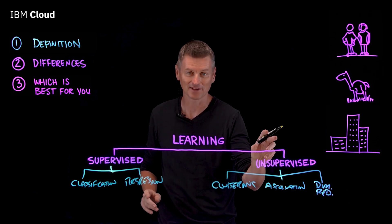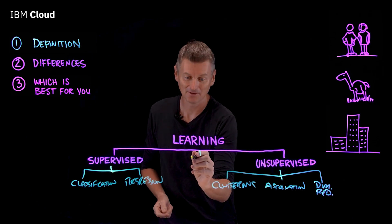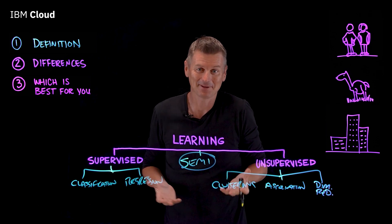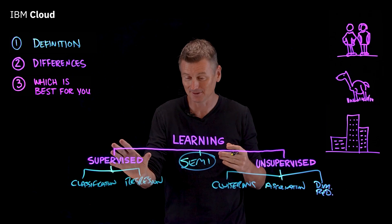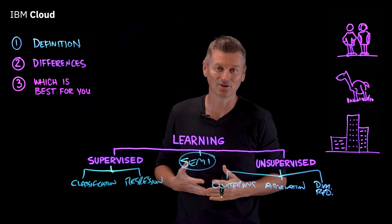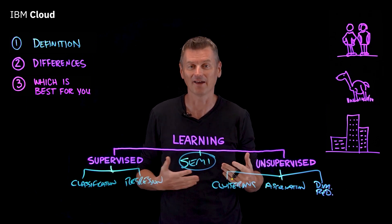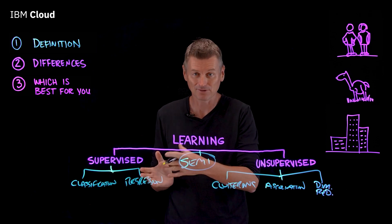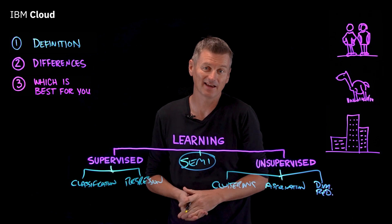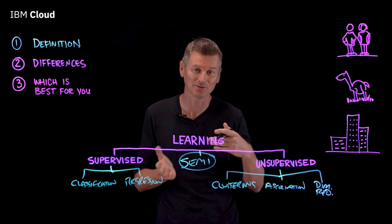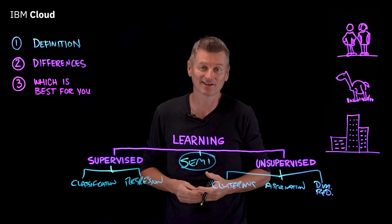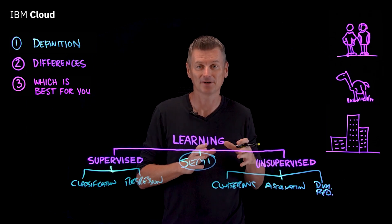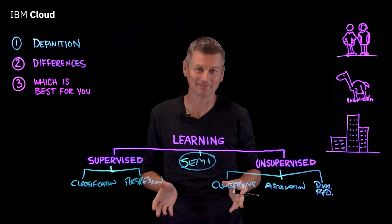It is not an either-or choice — may I present the middle ground known as semi-supervised learning. This is a happy medium where you use a training data set with both labeled and unlabeled data. It's particularly useful when it's difficult to extract relevant features from data and when you have a high volume of data. For example, you could use a semi-supervised algorithm on a data set with millions of images where only a few thousand are labeled. Semi-supervised learning is ideal for medical images where a small amount of training data can lead to significant improvement in accuracy — for instance, a radiologist can label a small subset of CT scans for tumors or diseases, and then the machine can more accurately predict which patients might require more medical attention without labeling the entire set.